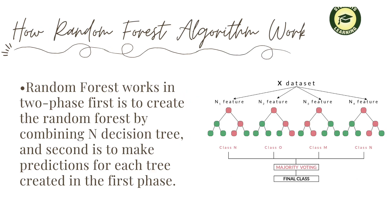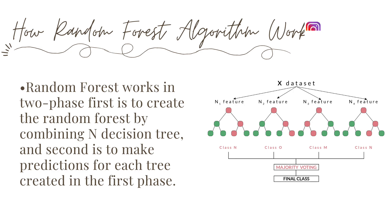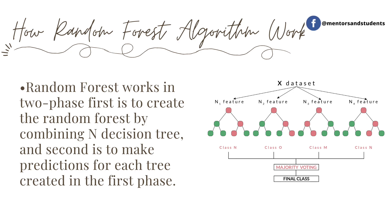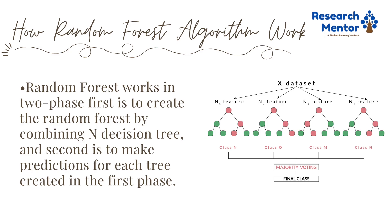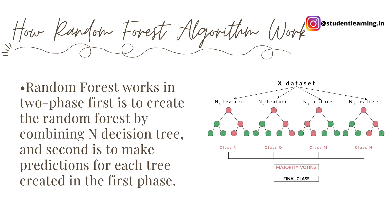How does the random forest algorithm work? Random forests work in two phases. First is to create the random forest by combining N decision trees. Second is to make predictions for each tree created in the first phase. So the first phase means creating multiple decision trees, and the second phase means going for the best predictions.